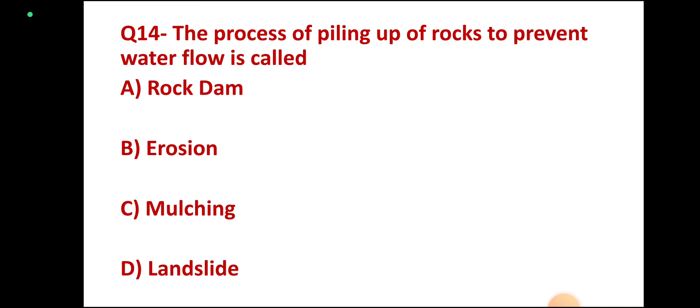Question 14: The process of filling up of the rocks to prevent water flow is called rock dam, erosion, mulching, or landslide. Correct answer: rock dam, option A.